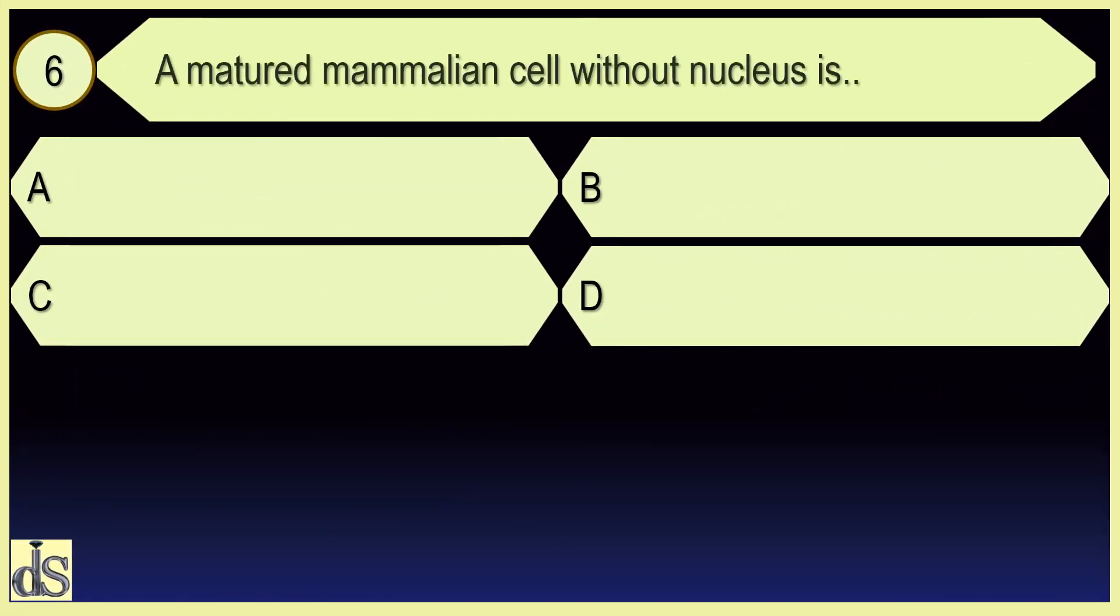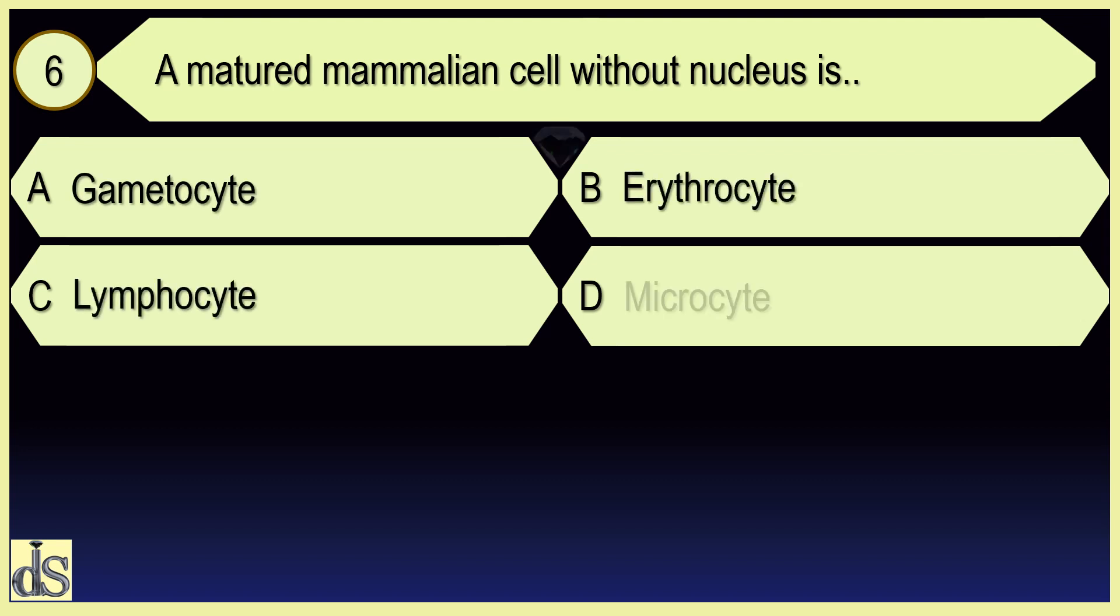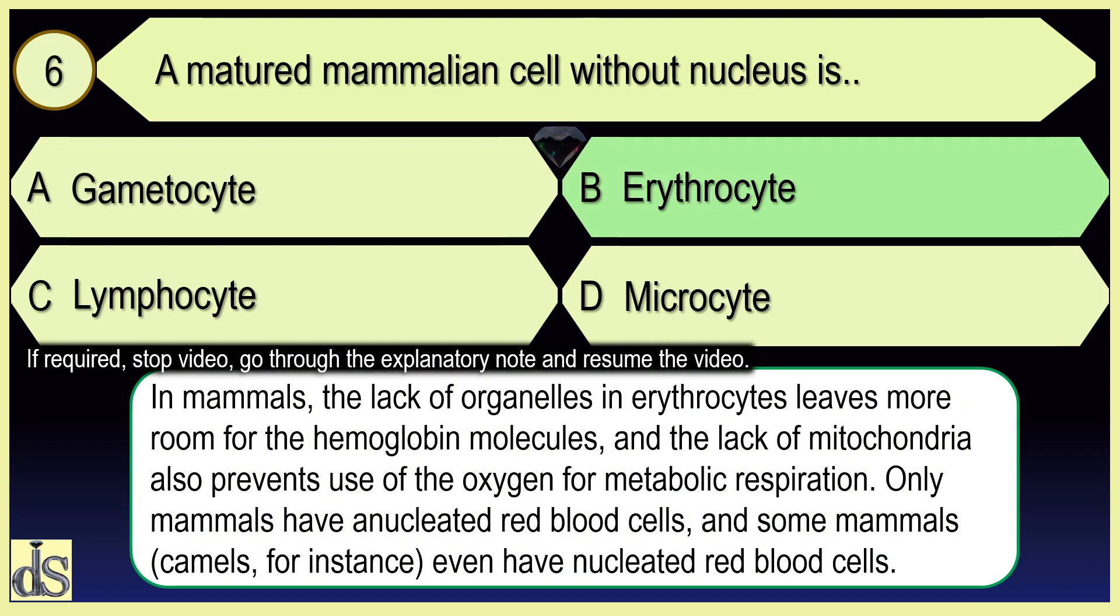A matured mammalian cell without nucleus is erythrocyte.